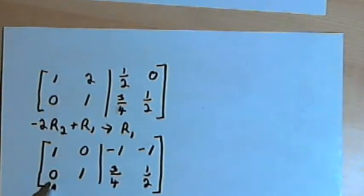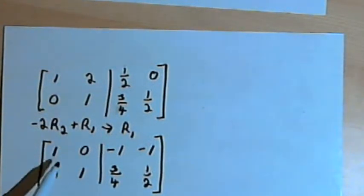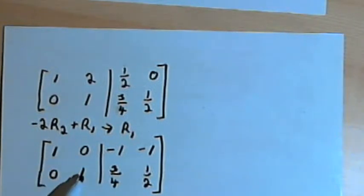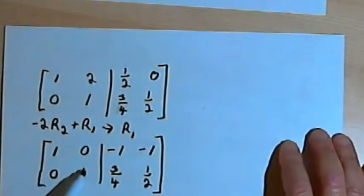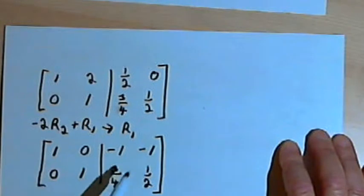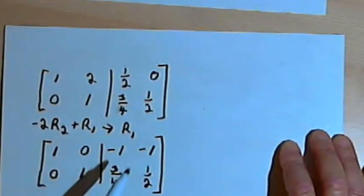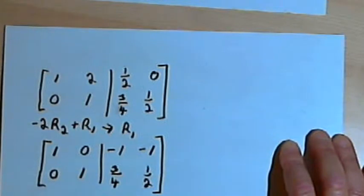So in my matrix now, on the left side I've got the identity matrix: 1, 0, 0, 1. On the right side I've got the inverse of the original matrix: negative 1, negative 1, 3/4, and 1/2.